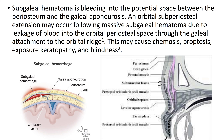An orbital subperiosteal extension may occur following massive subgaleal hematoma due to leakage of blood into the orbital periosteal space through the galeal attachment to the orbital ridge, as depicted here.